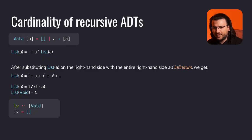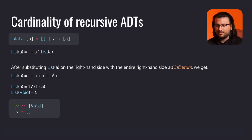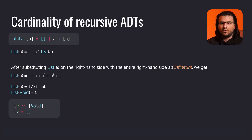Now let's consider a recursive algebraic data type and calculate its cardinality. A list of a can either be constructed with the empty list constructor or with the cons constructor that accepts two terms, one of type a and the other of list of a. This means its cardinality, list of a, is defined as 1 plus a times list of a. After substituting list of a on the right-hand side with the entire right-hand side ad infinitum, we get 1 plus a plus a squared plus a cubed and so on.